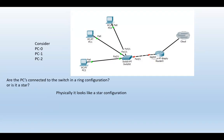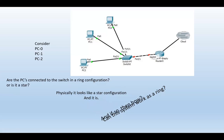Just to give you some visual idea — I'm going to show you the differences between physical topology and logical or signal topology. Consider the PCs zero, one, and two. Are these PCs connected to the switch in a ring configuration or is it a star? We just established that physical connection is a star — physically it looks like a star. But can the system work as a ring? Well, technically, theoretically, philosophically — yes, it can.